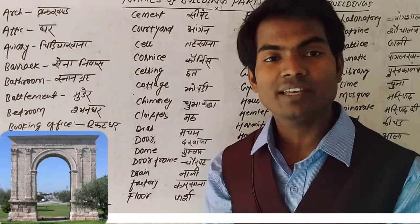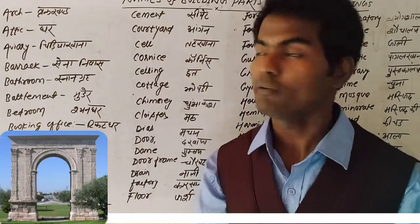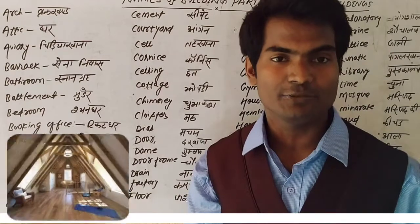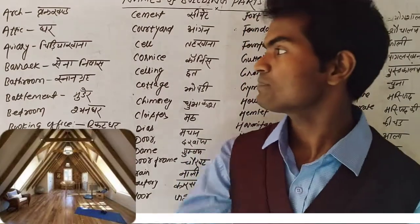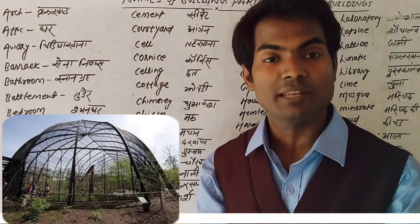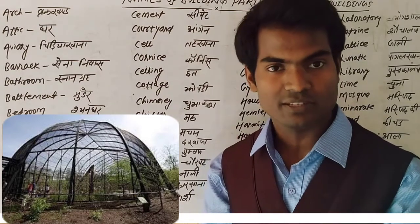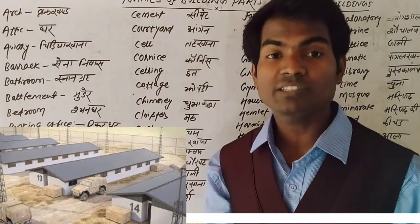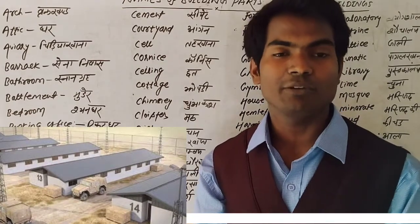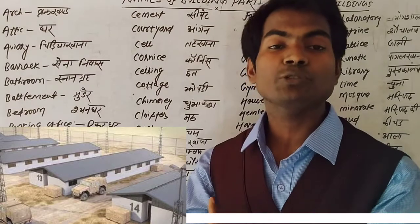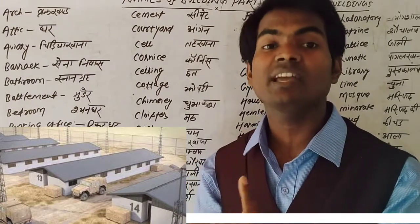Arch — arch means 'brick khand' (an arch). Next, attic means where we live, that upper floor area is called 'avari.' Aviary — what is the meaning of aviary? Aviary is where birds and animals are kept, that is called aviary.